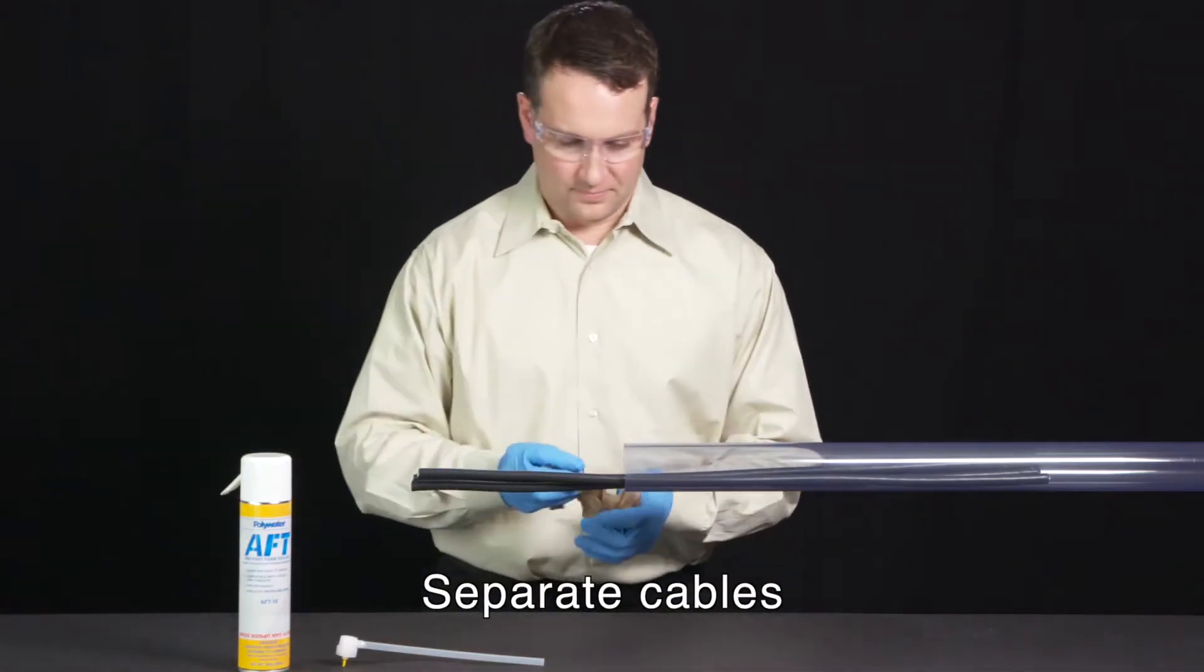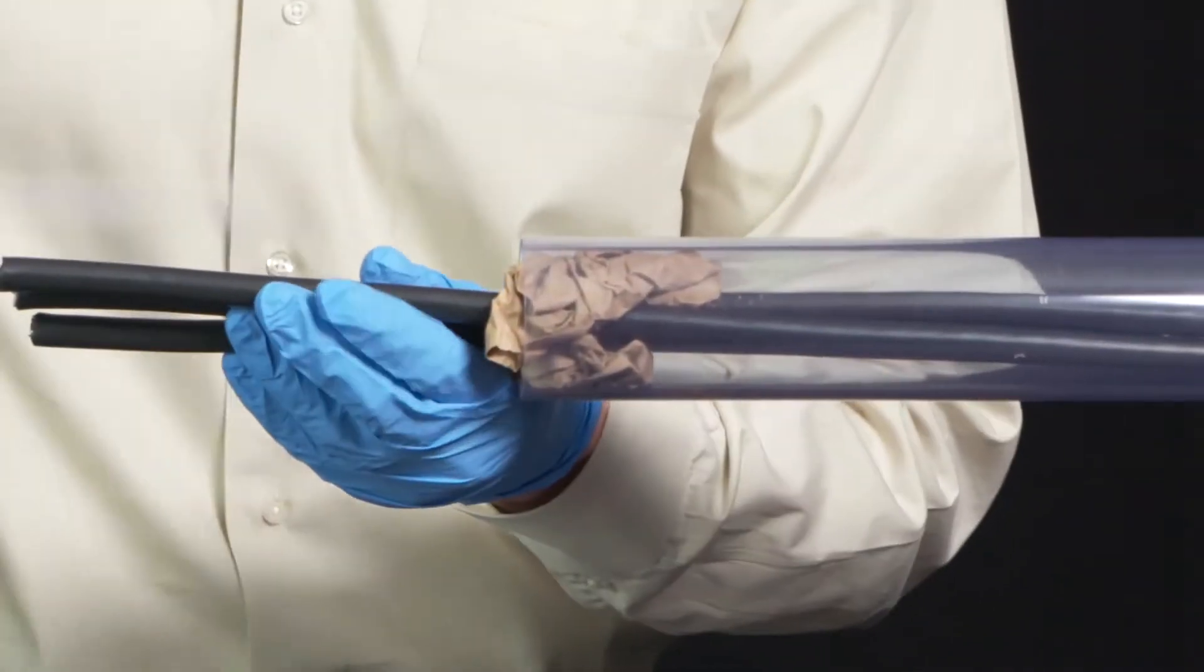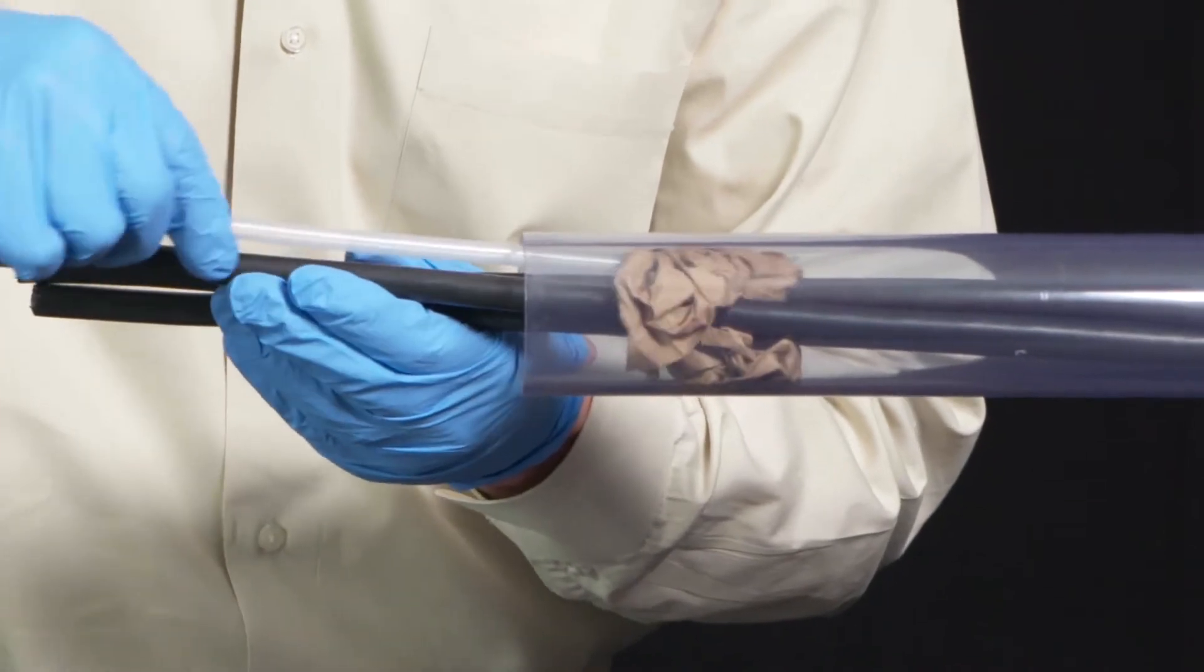Remove tape or cable ties from cable bundles and separate cables. Insert a dam of crumpled paper or foam strip pieces about 6 inches into the conduit.